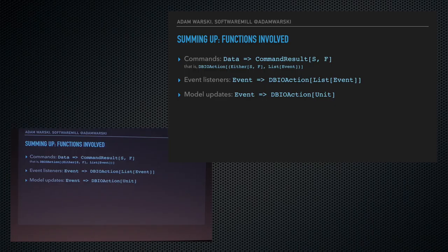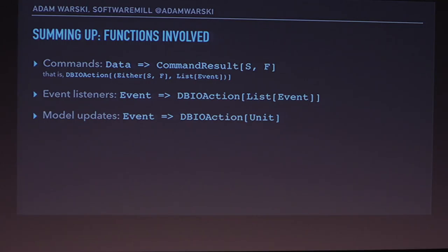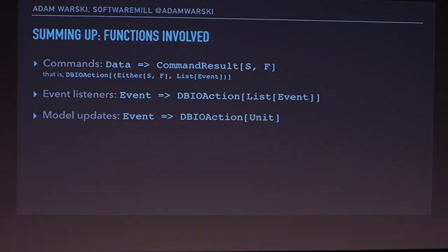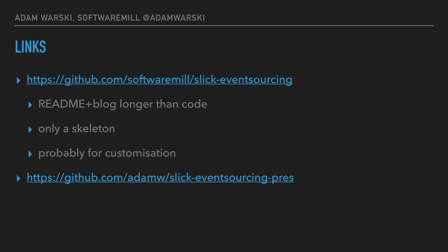Summing up: in this approach we have three main simple functions. First, a command takes some user data, validates it, and returns a success or failure result plus a list of events. Second, event listeners take an event and perform side effects like sending an email, returning a list of more events to emit. Third, model update functions actually update the read model. The key distinction between event listeners and model updates is that model updates can be rerun multiple times to bring your model to a certain point in time, while event listeners should only run once when the event actually happens because that's where the side effects occur.